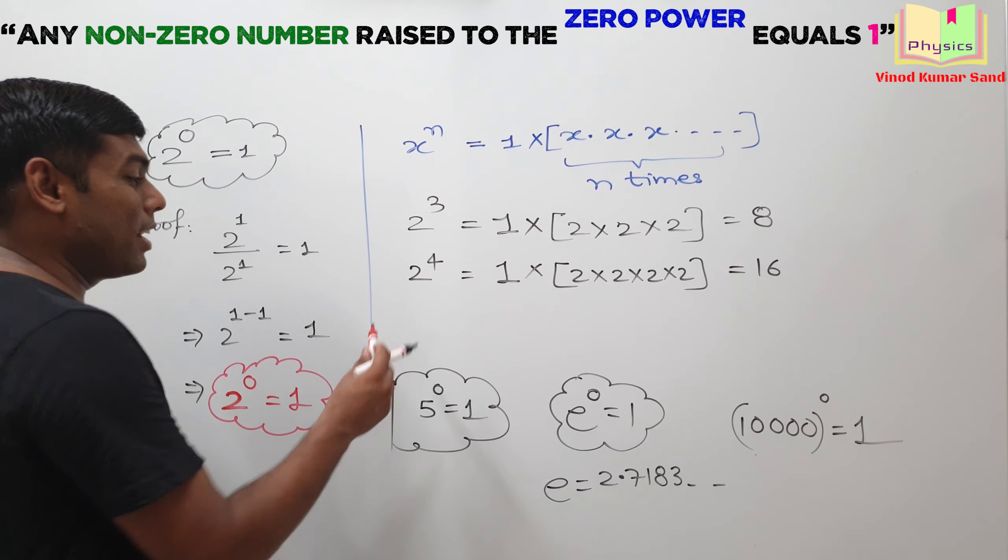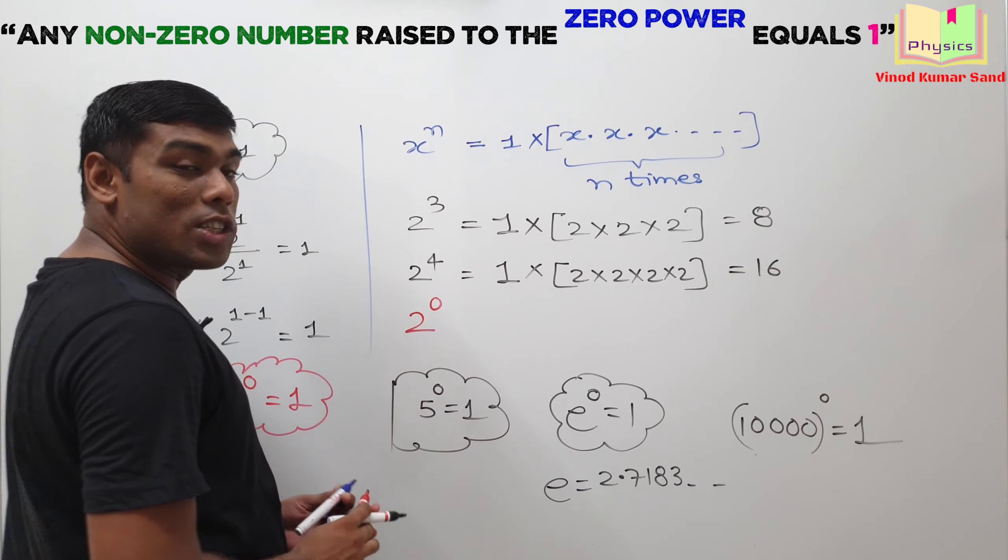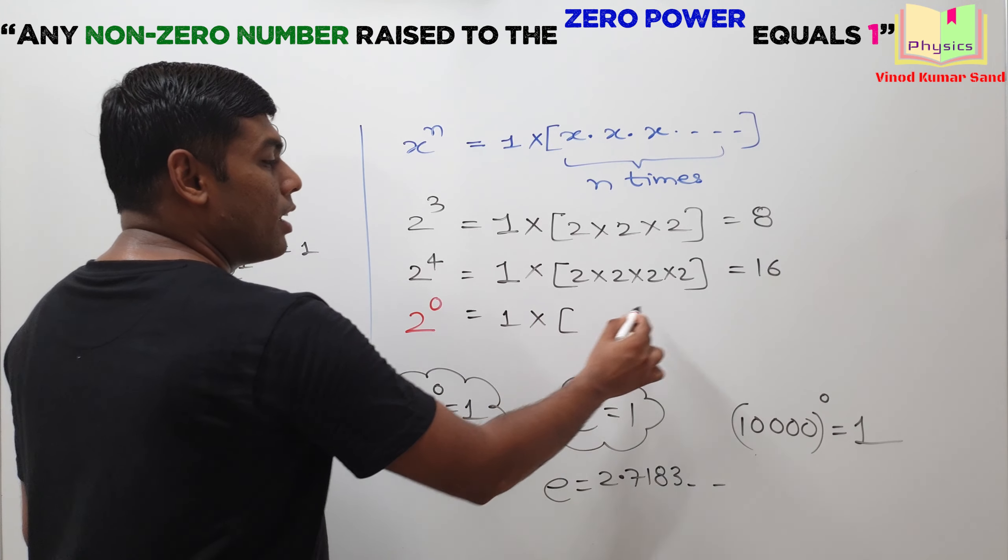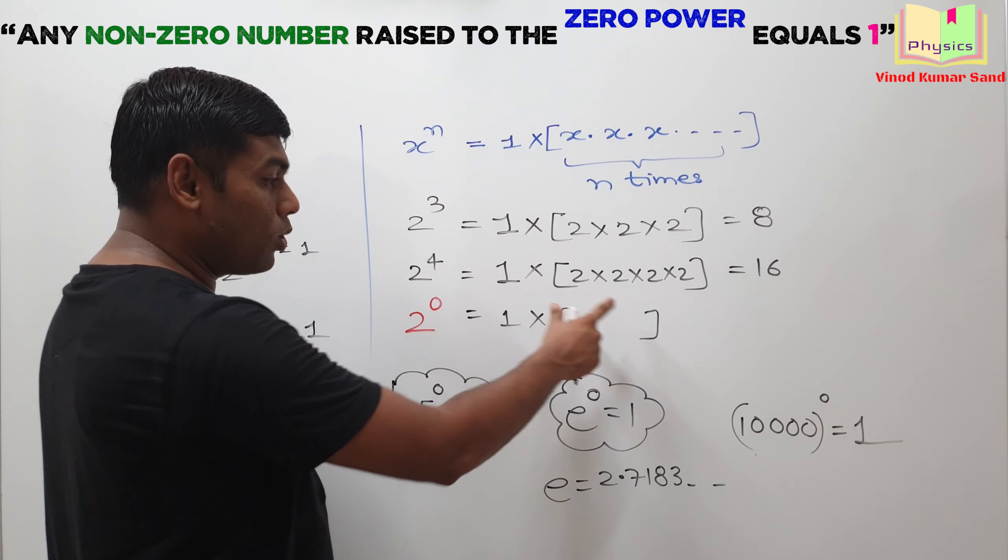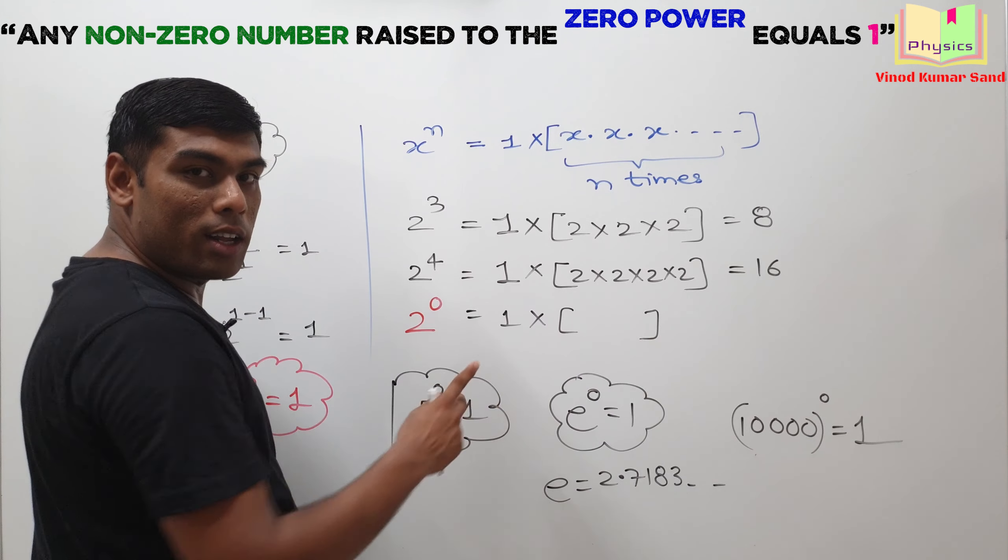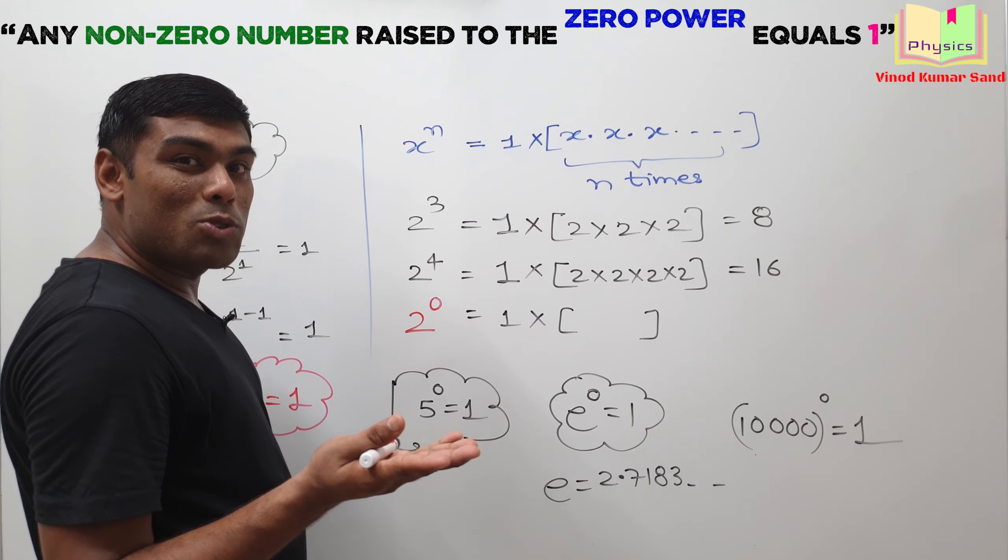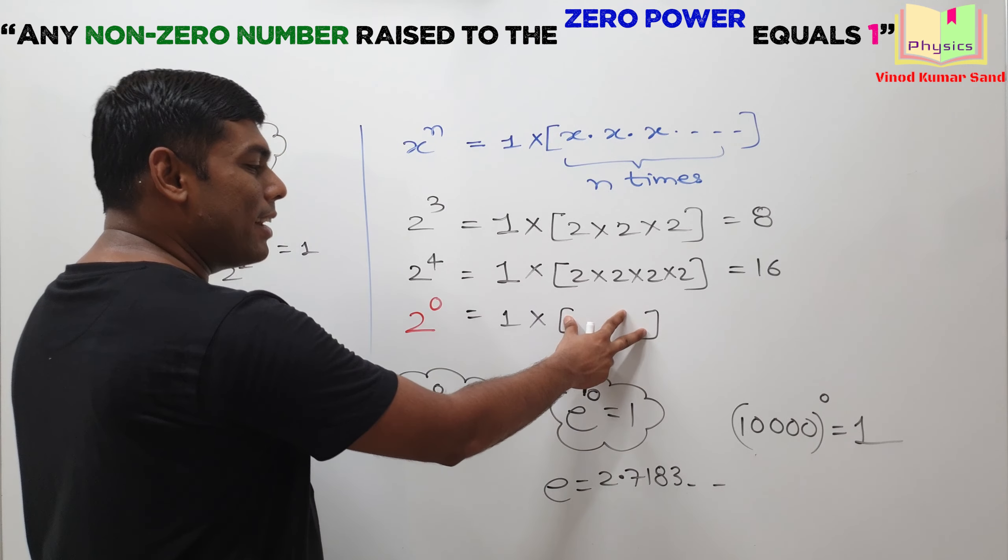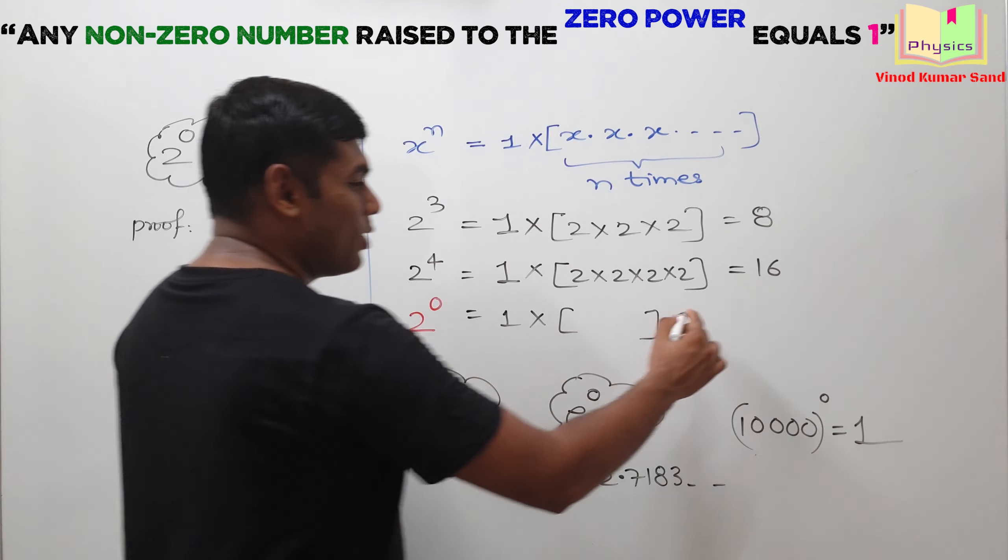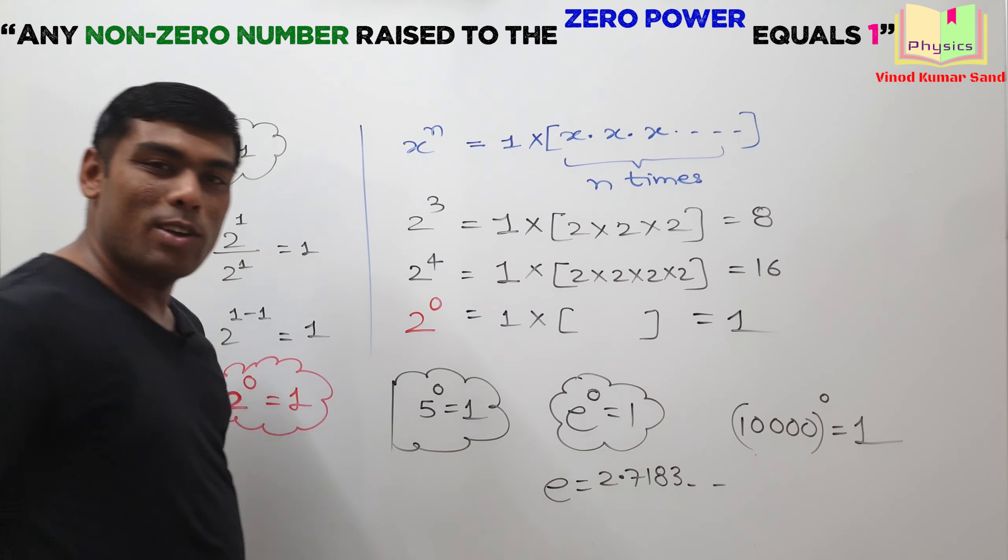Now, if I ask you again 2 to power 0, what does it mean? The 2 is multiplied 0 times with 1. Multiplying 0 times means what? You are not multiplying anything with 1. So, the answer will come out to be 1.